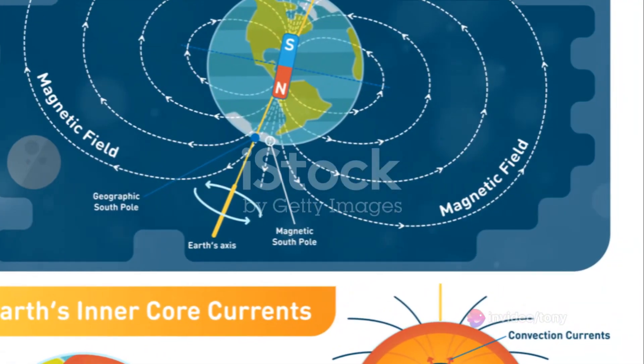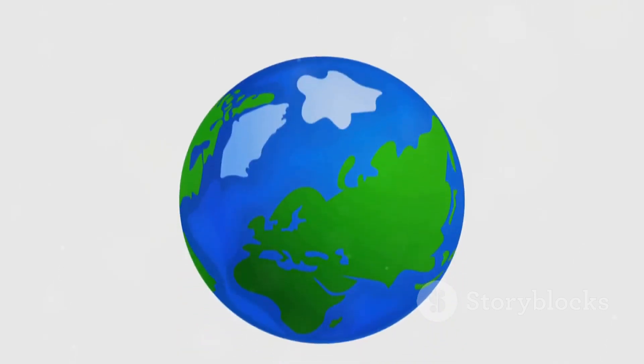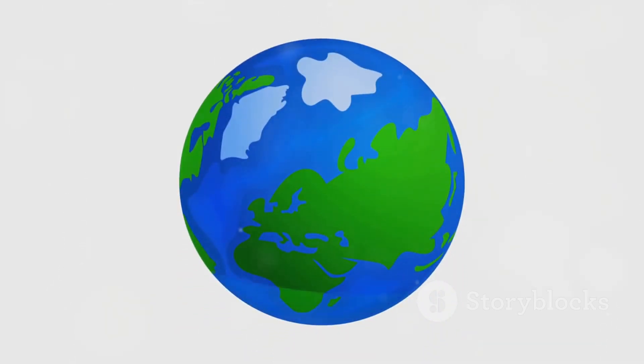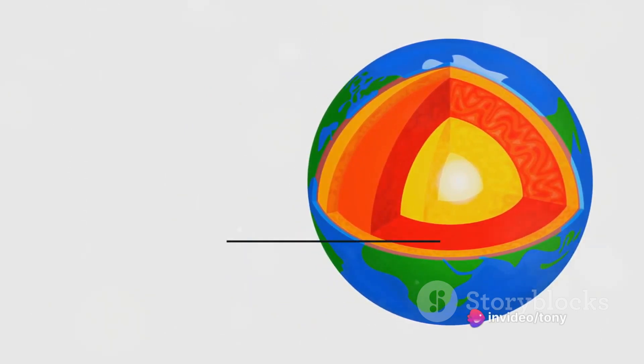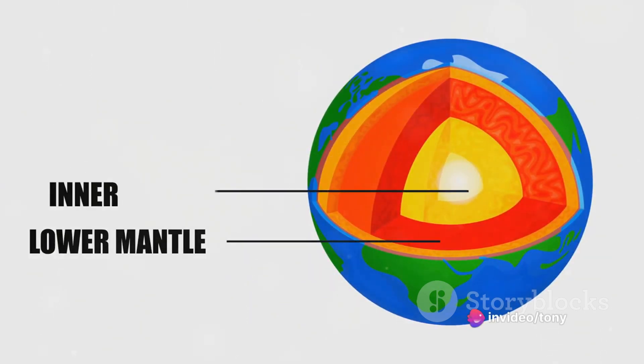But how does this magnetic field come into existence, you ask? The answer lies beneath our feet in the Earth's molten core. The core is a sweltering mix of metals, primarily iron and nickel, which creates electrical currents as they move.